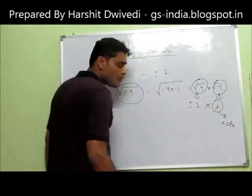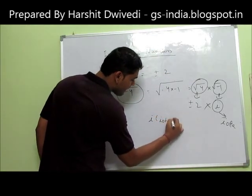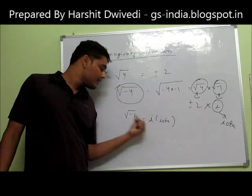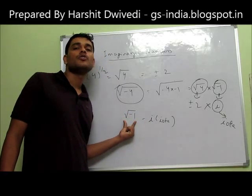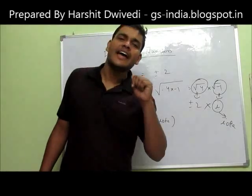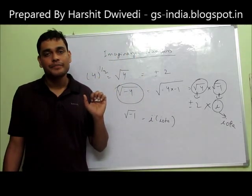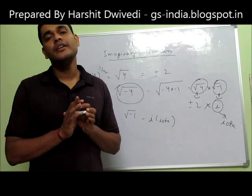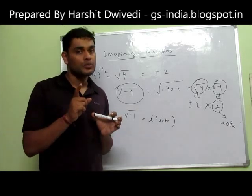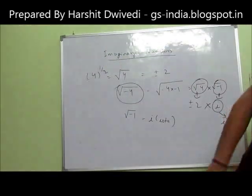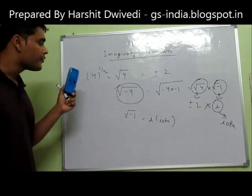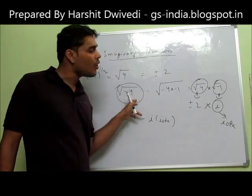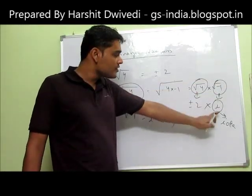Iota is equal to under root of minus 1. So whenever you find i, we already know that it equals under root of minus 1. And whenever there is a term such as i present in any expression, we immediately know that this is an imaginary number. The main reason for the presence of an imaginary number is that we are doing a square root of a negative quantity. Under root of a negative quantity is not defined because under root of minus 1 is present, and under root of minus 1 is represented as Iota.